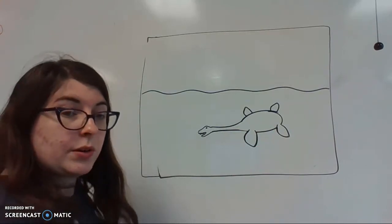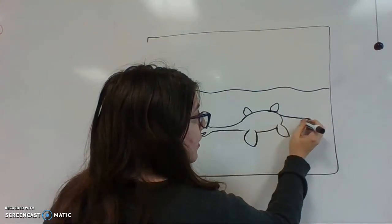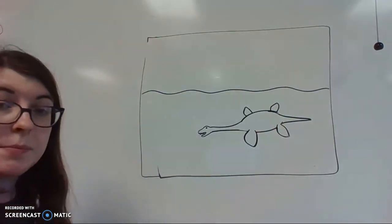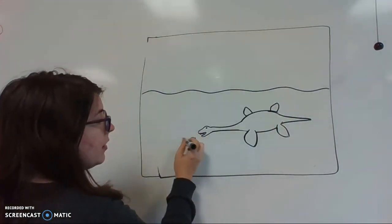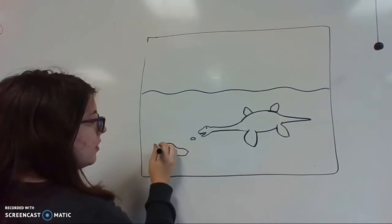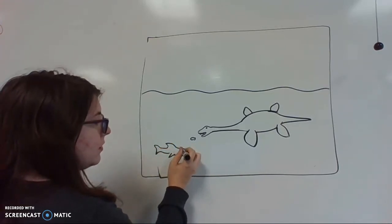Now last our plesiosaur needs a tail. We're going to make a long tail right behind it. If you want to give the plesiosaur something to eat, you can draw some fish in the ocean. Maybe a megalodon, or other sharks, or prehistoric animals. Up to you.